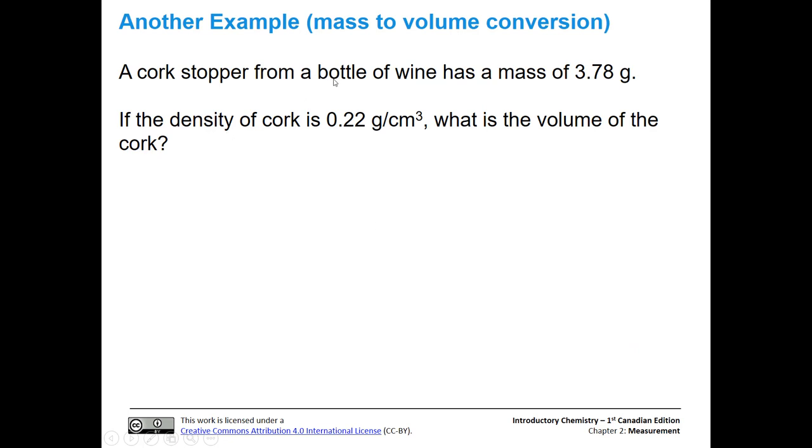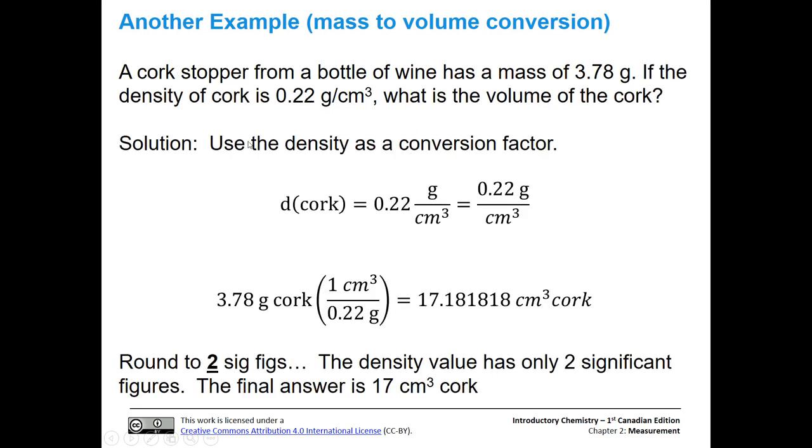Let's do another mass to volume conversion. A cork stopper from a bottle of wine has a mass of 3.78 grams. We know the density of this particular cork is 0.22 g/cm³. What is the volume of the cork? Go ahead and try that one and then we'll go over the answer.